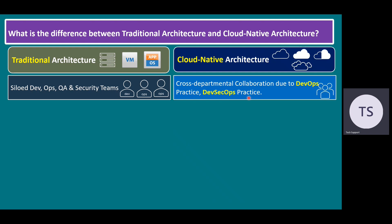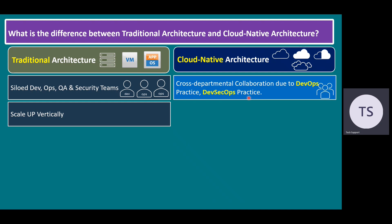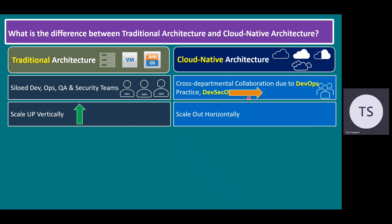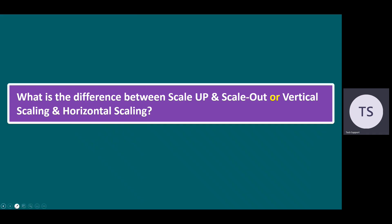As a team, everyone achieves more. In traditional architecture, we can scale up vertically — within a server we can add additional resources. And when it comes to scale-out horizontally, that means if we have one server, we can add multiple servers. Even if you have one virtual machine, with scale-out horizontally, we can add VM2, VM3, and so on. In the next slide, I will explain further what is the difference between scale-up vertically and scale-out horizontally, or vertical scaling versus horizontal scaling.